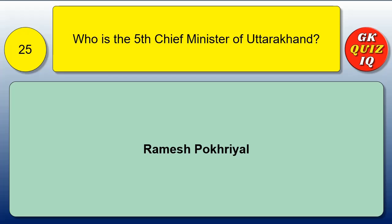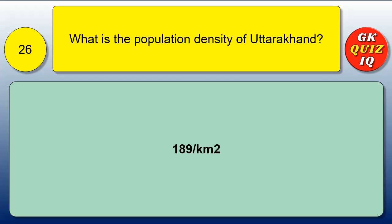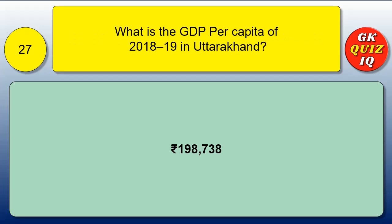Who is the fifth chief minister of Uttarakhand? Ramesh Pokhriyal. What is the population density of Uttarakhand? 189 per square kilometer. What is the GDP per capita of 2018–19 in Uttarakhand? 1,98,738 rupees.